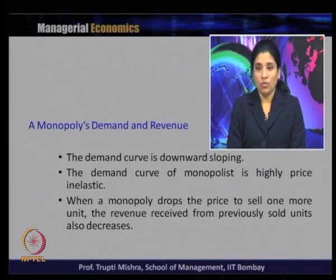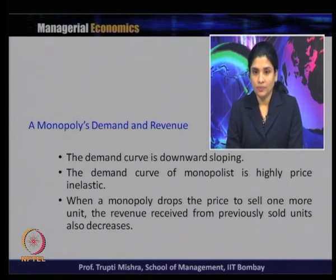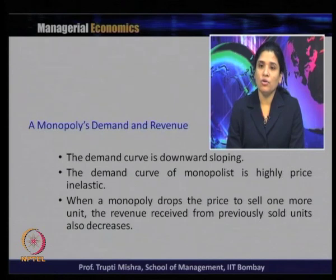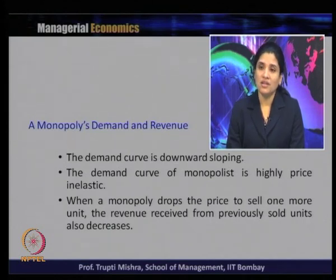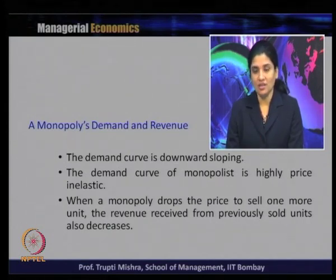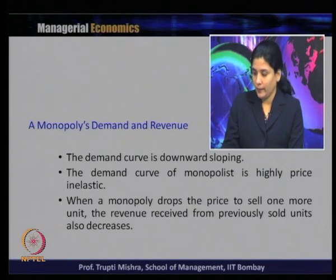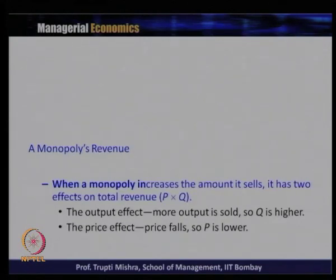If the monopoly firm wants to sell more, it has to reduce the price. In this case, the revenue received from previously sold units also decreases because price is decreasing even as quantity increases. When a monopoly increases output, it has two effects on total revenue.